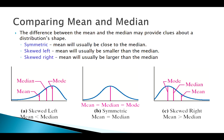For a right-skewed distribution, the mean is pulled to the right, so the mean will be greater than the median. Visually: for a perfectly symmetric distribution, mean equals median — and we can bring the mode in here too. Left-skewed: mean less than median. Right-skewed: mean greater than median. The mean and median are the most important and most common measures of center.